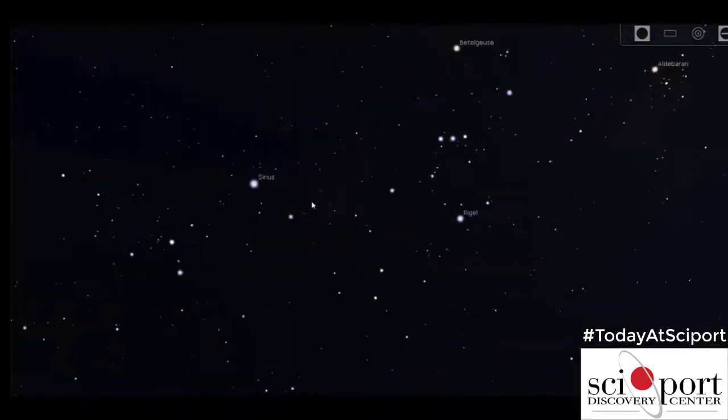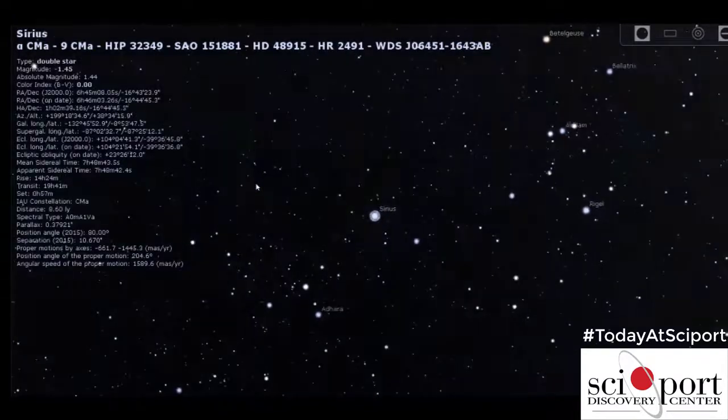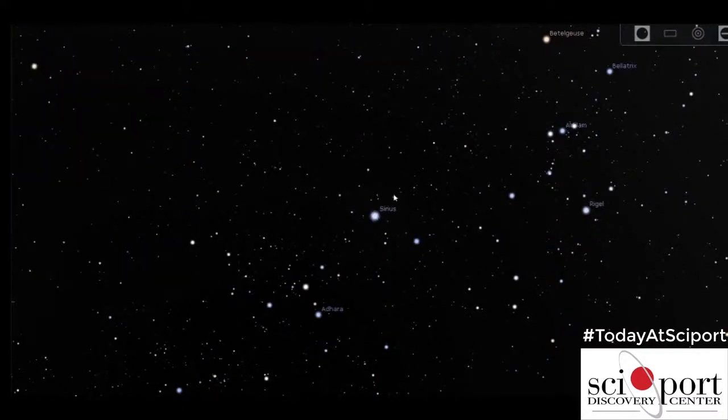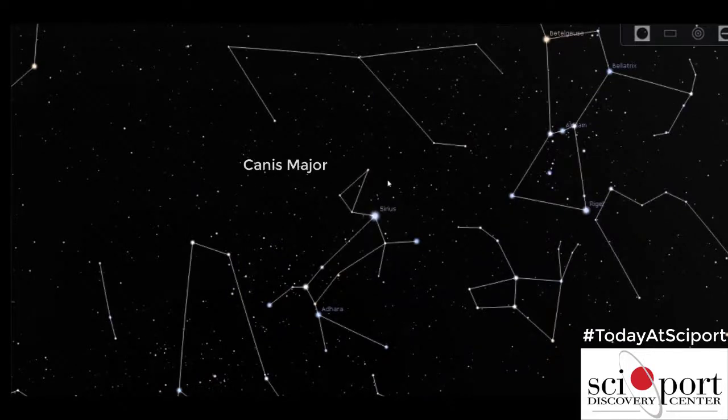There's another bright object that's out in the sky. This one is actually a star and this star is called Sirius. And Sirius is the brightest star in the nighttime sky. Now Sirius is a part of a constellation that is called Canis Major or in other words, the greater dog or the big dog.